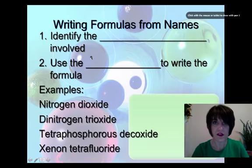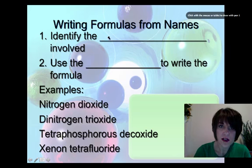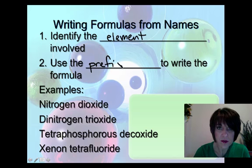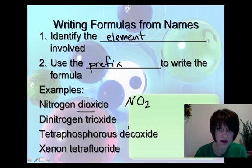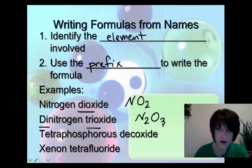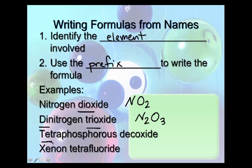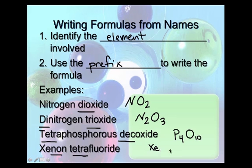When writing formulas from names, first identify the elements involved, then use the prefix to write the formula. For example: nitrogen dioxide — di stands for two, so NO₂. Dinitrogen trioxide: di means two nitrogens and tri means three oxygens, so N₂O₃. Tetraphosphorus decaoxide: tetra is four phosphoruses and deca is ten oxygens, so P₄O₁₀. And xenon tetrafluoride — one of the only compounds that can be made with noble gases — xenon is Xe, and tetra is four fluorines: XeF₄.